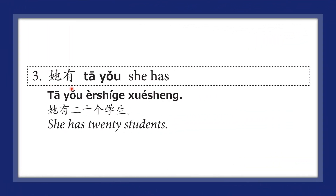她有, 她有 means she has. 她有二十个学生 — She has twenty students.